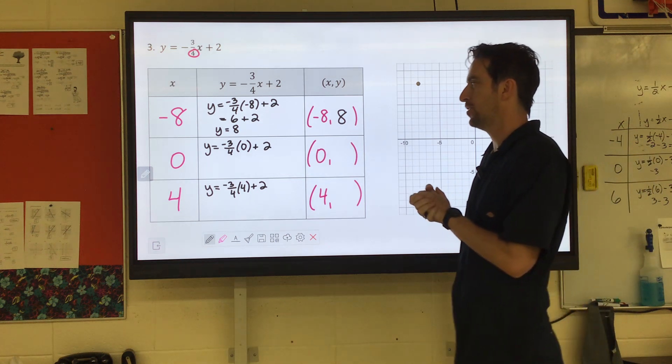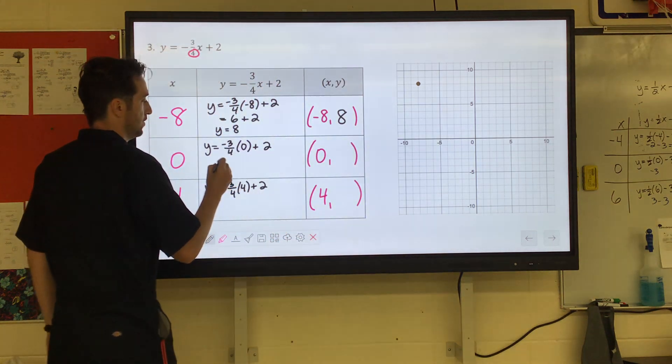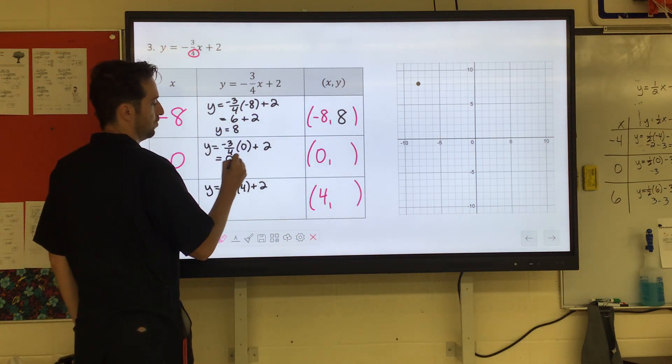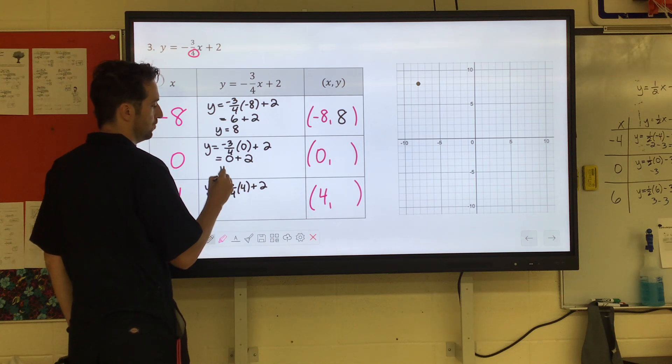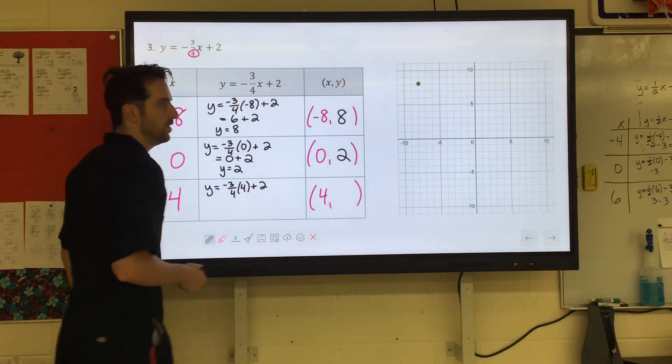The next one, when we substitute in zero, we have negative three-fourths times zero. Well, zero times anything is zero, so this just becomes zero plus two, which is two.